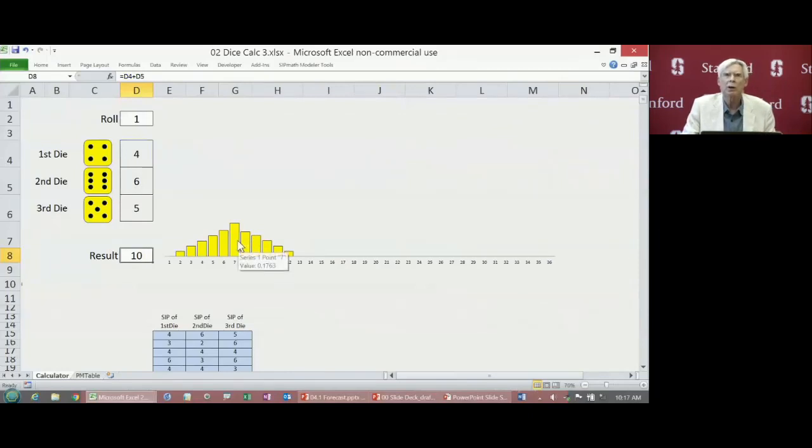There are many ways to get a seven, a one and a six, a six and a one, a five and a two, all those, there's only one way to get a two, two ones, or a twelve, two sixes.